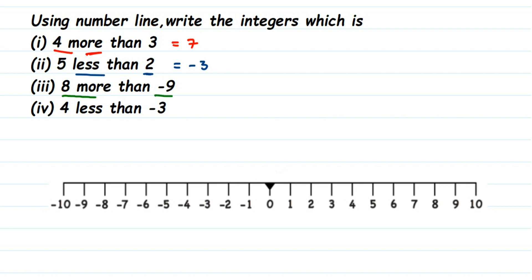The next question is eight more than minus nine. We have to add eight to minus nine, so 'more' means go to the right side. First, locate minus nine on the left side of the number line. Then go eight units to the right: one, two, three, four, five, six, seven, eight — we have come to minus one. So the answer is minus one.